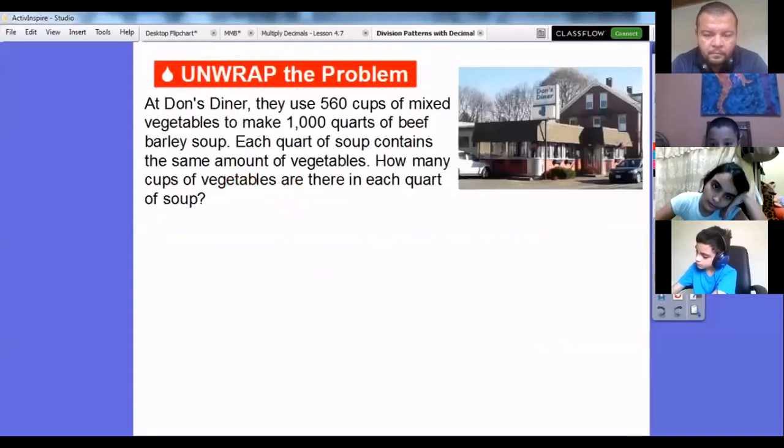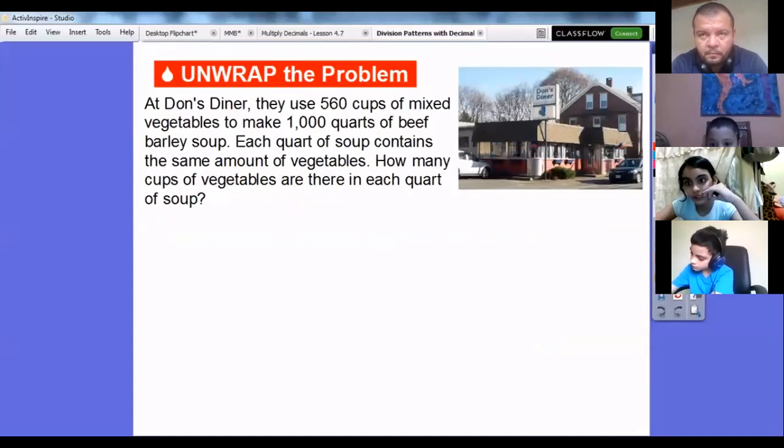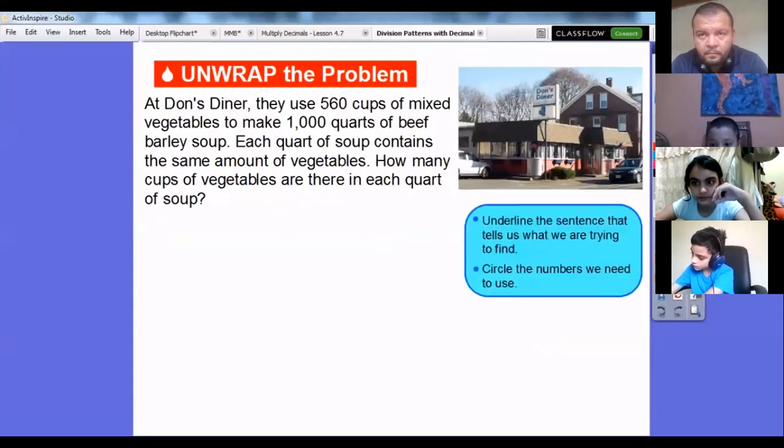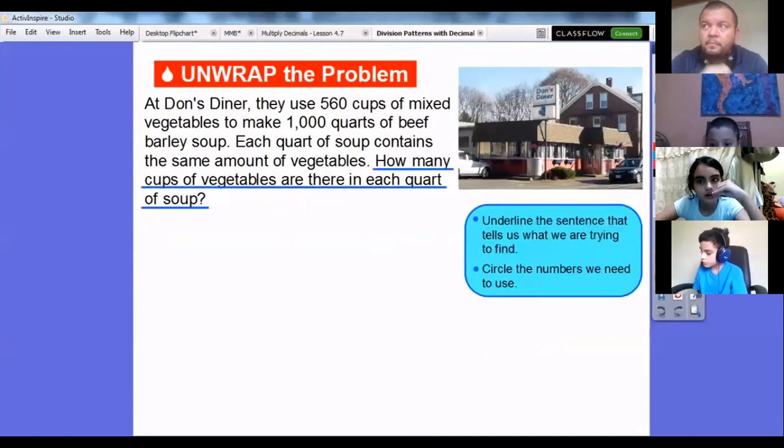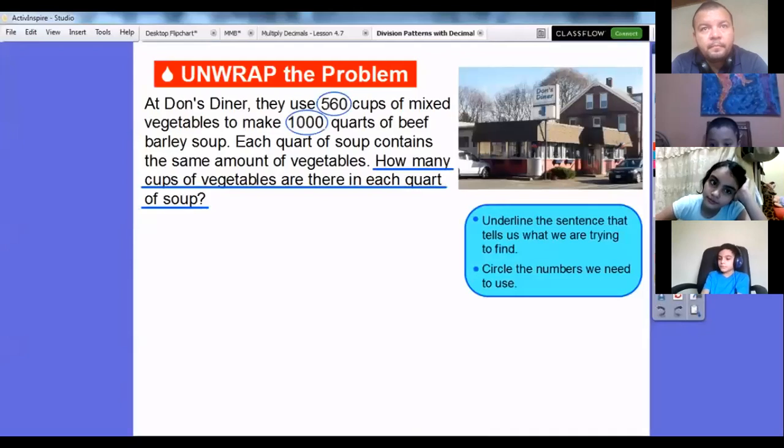At Dog's Diner, they used 560 cups of mixed vegetables to make 1,000 quarts of wheat barley soup. Each quart of soup contains the same amount of vegetables. So how many cups of vegetables are there in a quart of soup? Let's underline the sentence that tells us what we're trying to find. We're trying to find how many cups of vegetables are there in each quart of soup. Circle the numbers we're going to use: 560 and 1,000, and we're going to divide these two numbers.